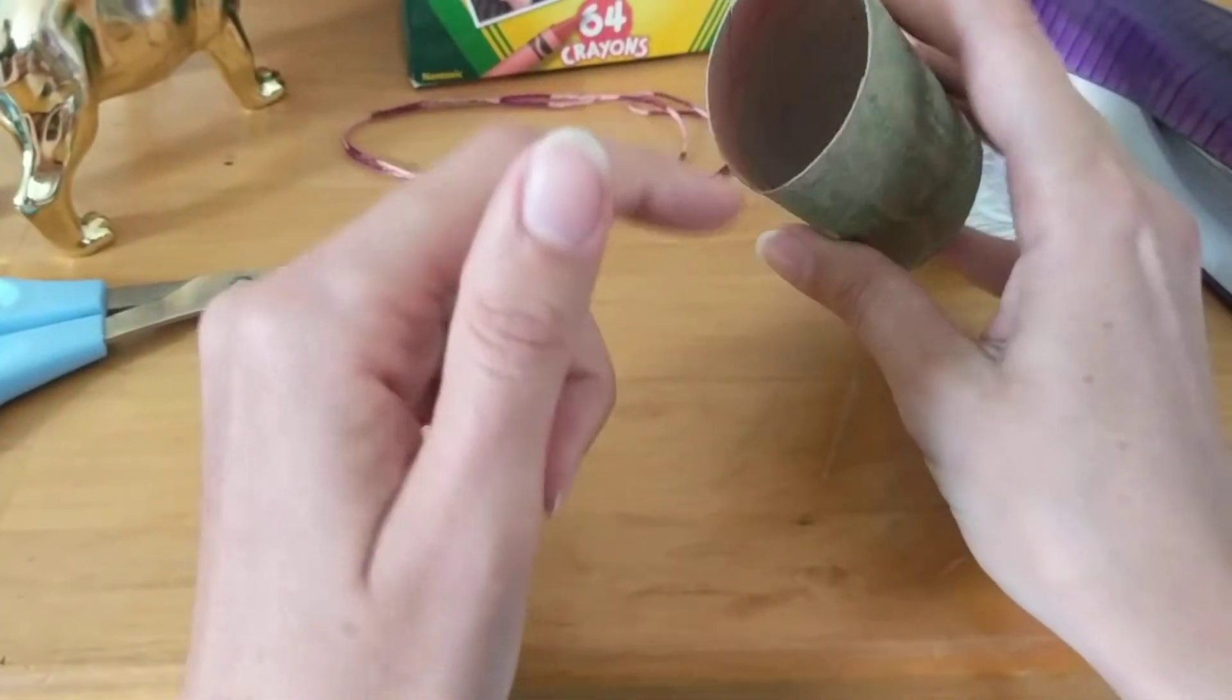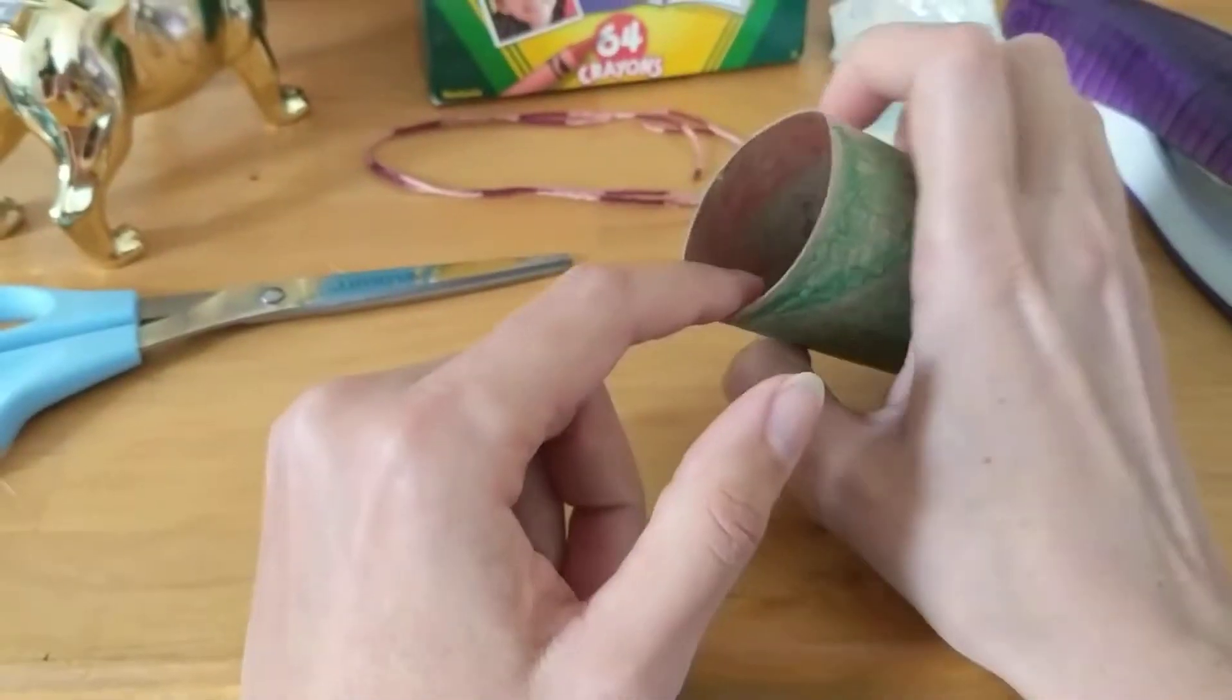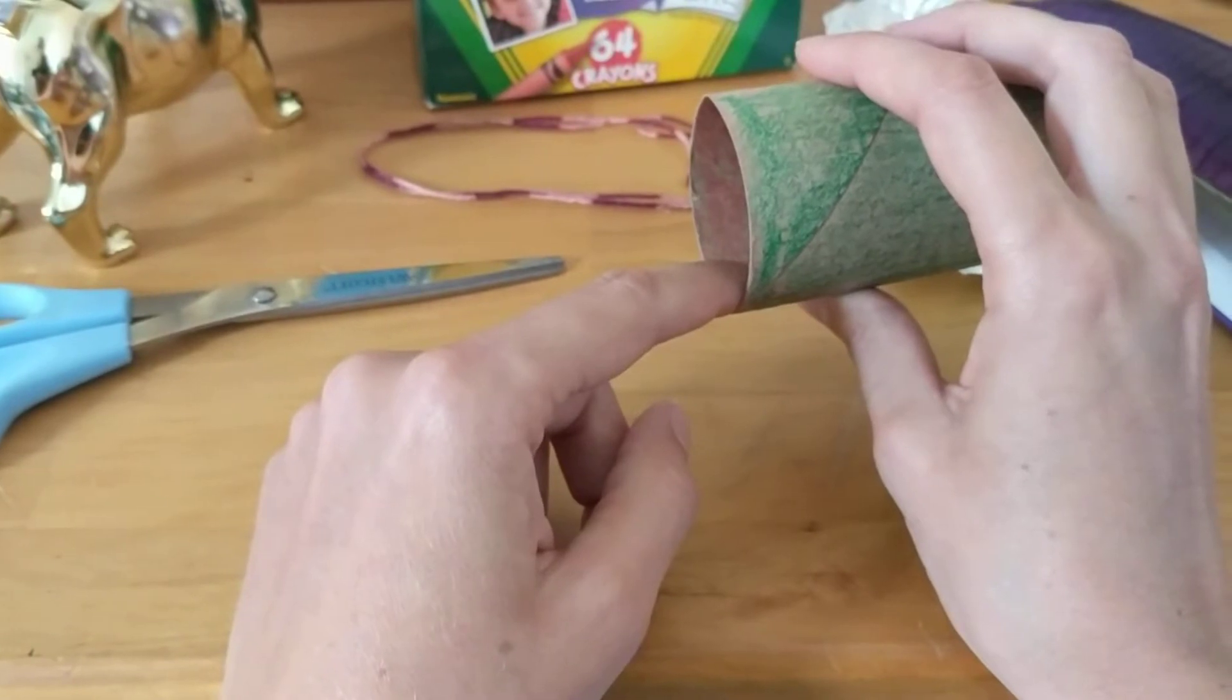The crayons work pretty well. I also decided to color on the inside of the tube in red or orange, whatever color you want to use, because this is inside of the creature's mouth.